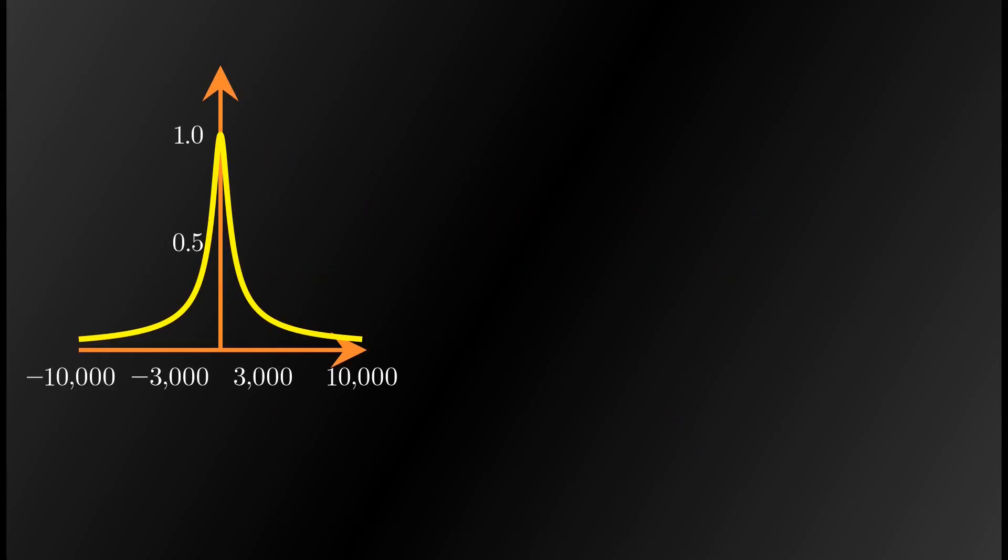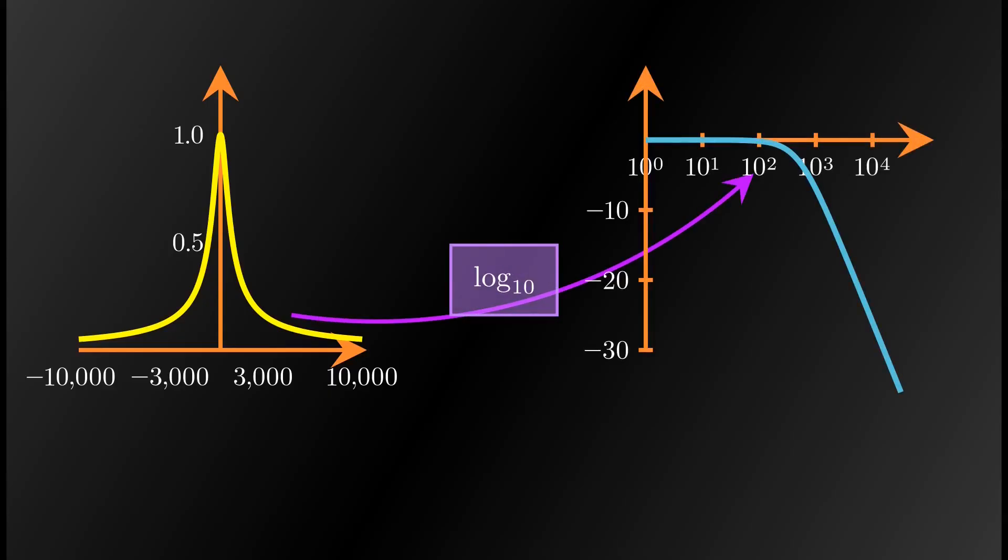Sketching a Bode plot is not so difficult. For the x-axis, take the logarithm of the frequency omega, and put the result as the axis label. For the y-axis, take the logarithm of the magnitude response, multiply it by 20, and use the result for the axis label.